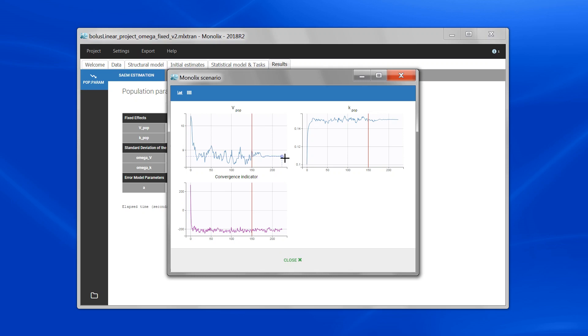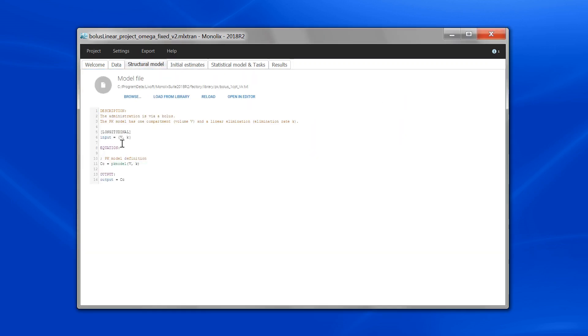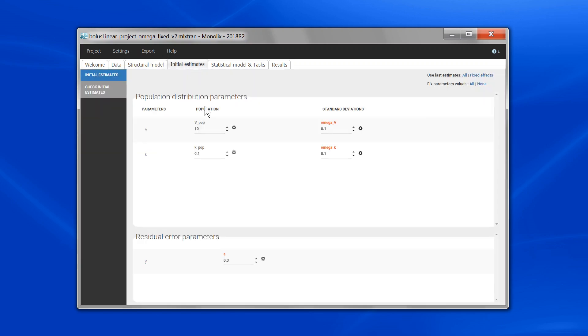I will now explain to you how we go from one iteration to the next one step by step. For this, I have chosen a very simple one compartment model with parameters v and k, so a bolus administration and a linear elimination. And to better follow what is going on, I have fixed all population parameters except vpop and kpop, which have starting values 10 and 0.1.